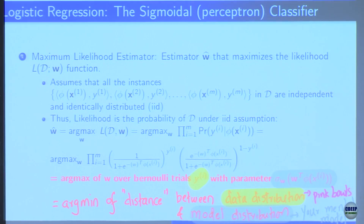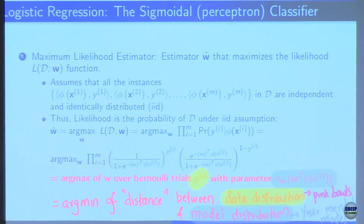As per your model distribution, what would be the length of the representation? As sigma becomes close to 1, minus log is close to 0; as sigma becomes close to 0, minus log tends to infinity. If your event is very likely, minus log says you need very few bits; if very unlikely, your code length increases.